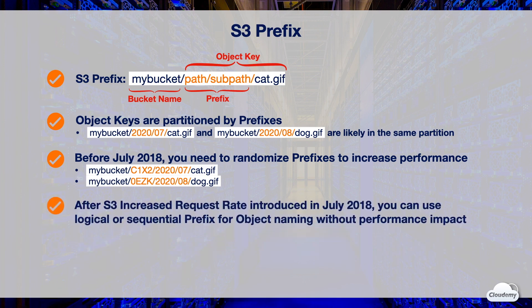After AWS introduced S3 increased request rate, you no longer need to randomize prefixes. You can use logical or sequential prefixes for object naming without performance impact.